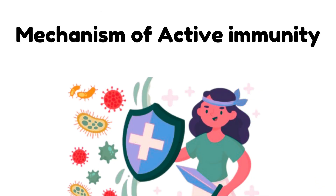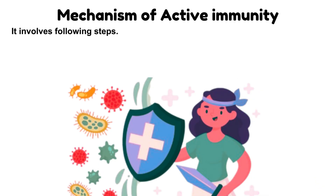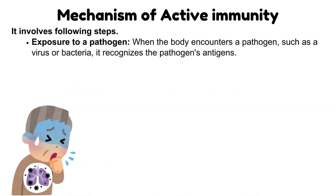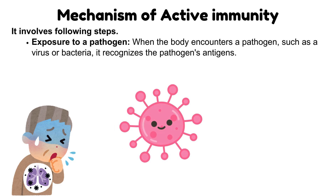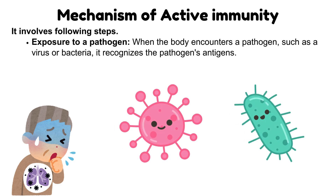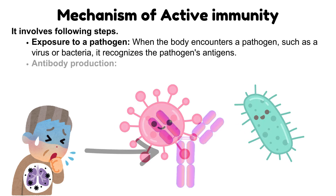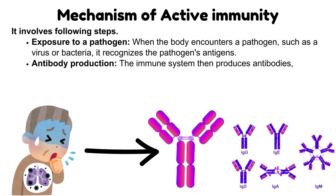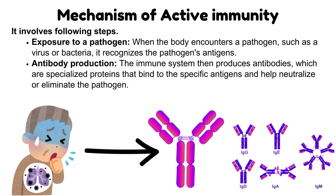The mechanism of active immunity involves the following steps. Exposure to a pathogen: when the body encounters a pathogen, such as a virus or bacteria, it recognizes the pathogen's antigens. Antibody Production: the immune system then produces antibodies, which are specialized proteins that bind to the specific antigens and help neutralize or eliminate the pathogen.